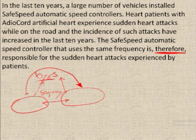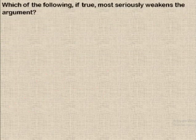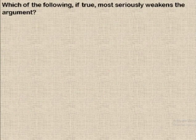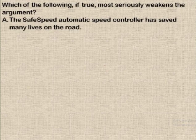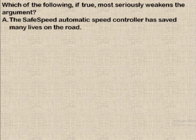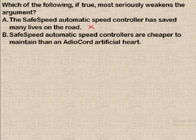One can notice there is a flaw in this argument. The question asks: 'Which of the following, if true, most seriously weakens the argument?' Choice A: 'The safe speed automatic speed controller has saved many lives.' This was the objective of the device, but there is no mention of any connection to the other device, so it neither strengthens nor weakens the argument — it can be safely eliminated.